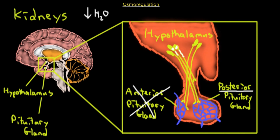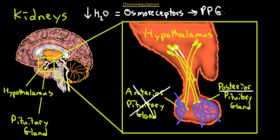To summarize: low water potential or low concentration of water in the blood is sensed by the osmoreceptors, which stimulate the posterior pituitary gland to release the ADH peptide hormone. It is made up of around nine amino acids — a quite small peptide — but it has a tremendous effect on the kidneys in terms of reabsorbing more water.